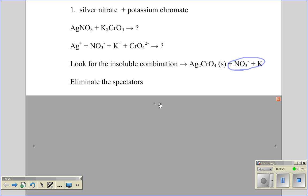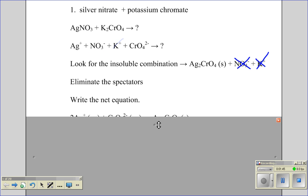So when I need to write my net ionic equation, I've got to eliminate the spectators. So that's simply saying that if it appears on both sides of the equation, like nitrate does and potassium does, then I get to just cross them out. They're not part of my net ionic.